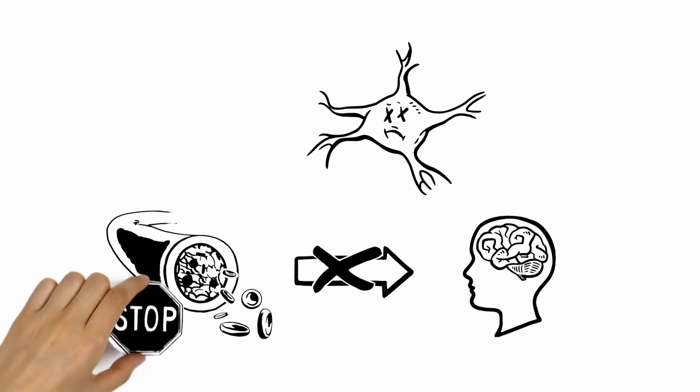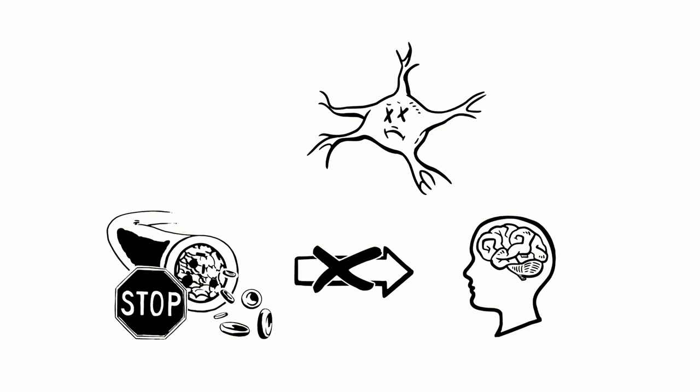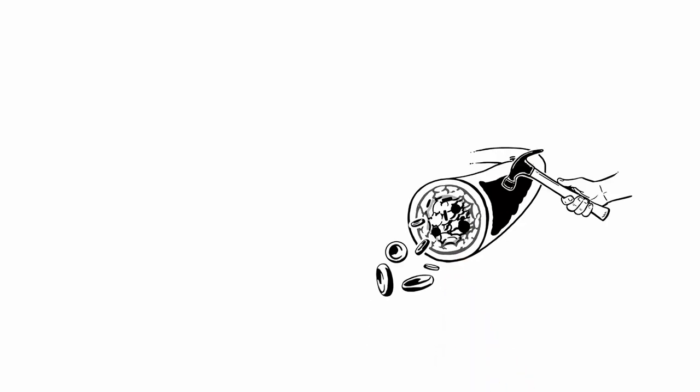This can happen in one of two ways: either a blockage in the vessels that cuts off the blood supply, or bleeding in and around the brain. As we age, our arteries become harder and narrower and more likely to become blocked.